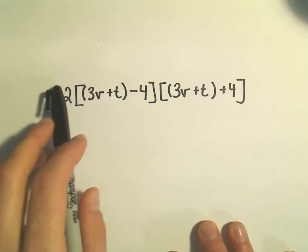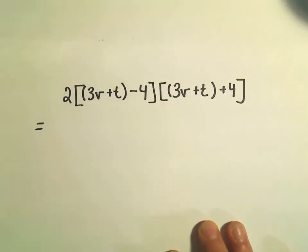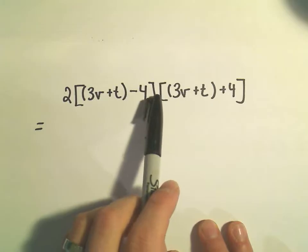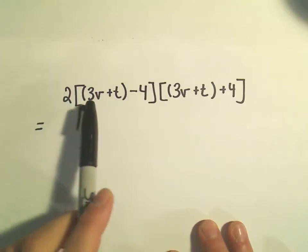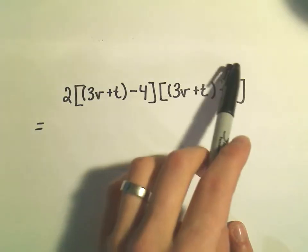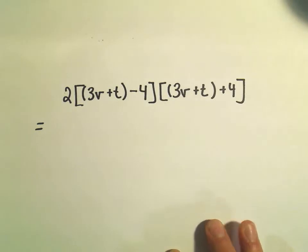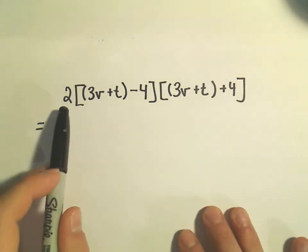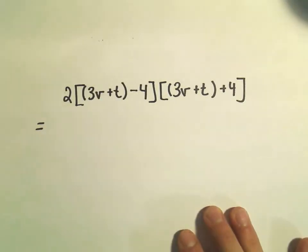Notice you wouldn't distribute the 2 to everything because there's not a plus or minus in between the brackets. In that case we would actually even need another set of parentheses, but just be careful about that. The 2 is only going to get applied to one set of brackets.